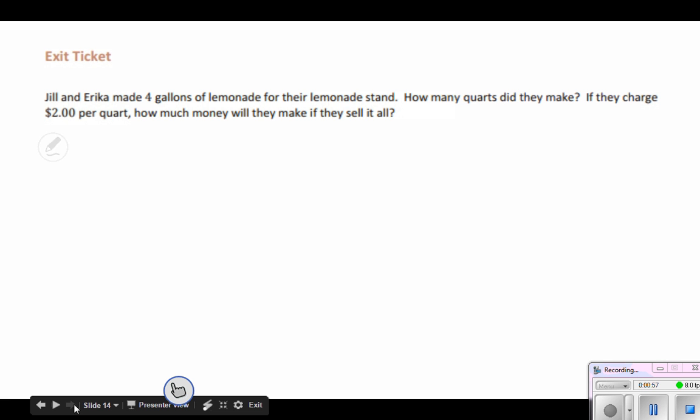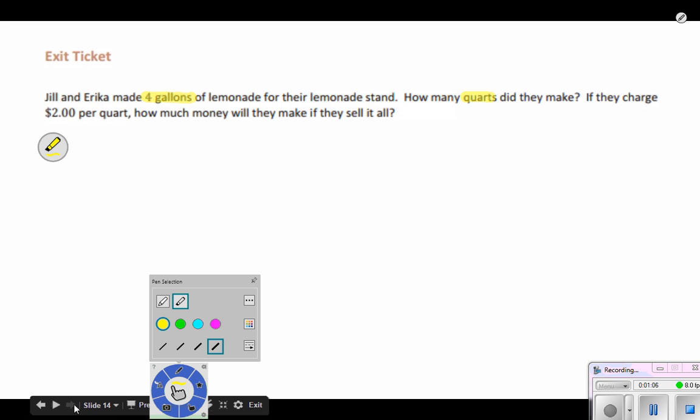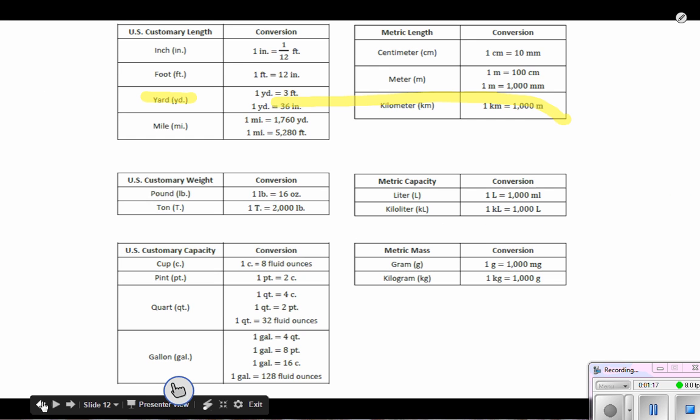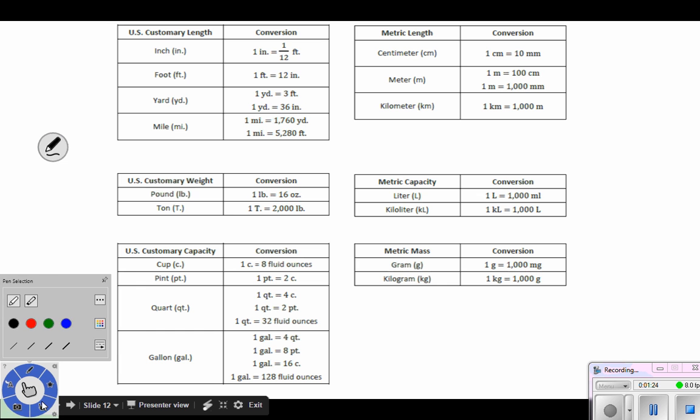So we have four gallons and we're finding out how many quarts are in four gallons. Some of you might already know it, but if you don't, all we have to do is look up at this chart. I see gallons, and I can see that one gallon is equal to four quarts.